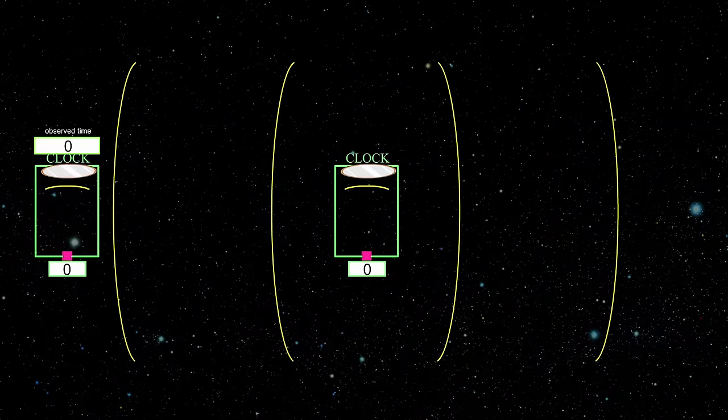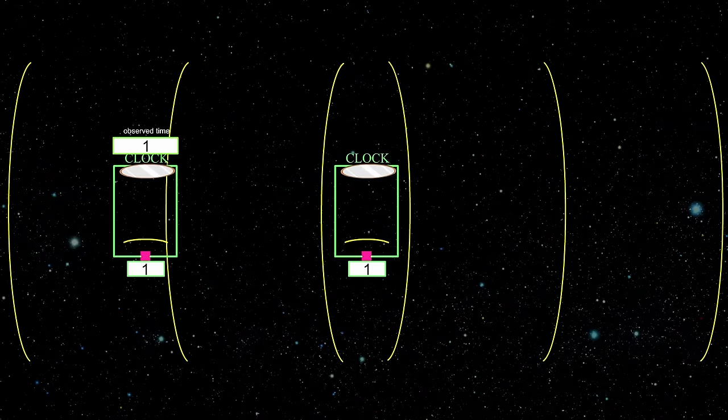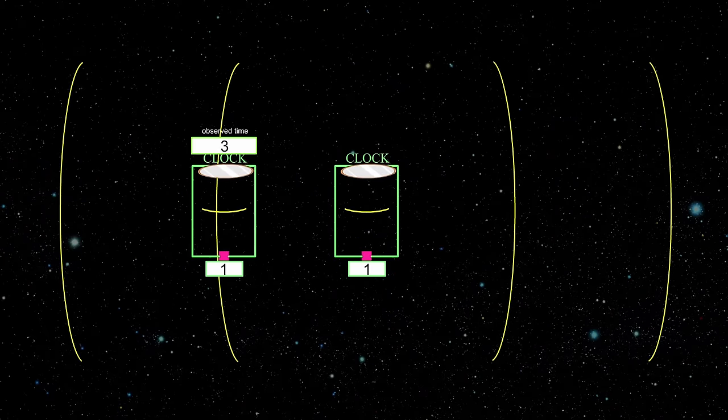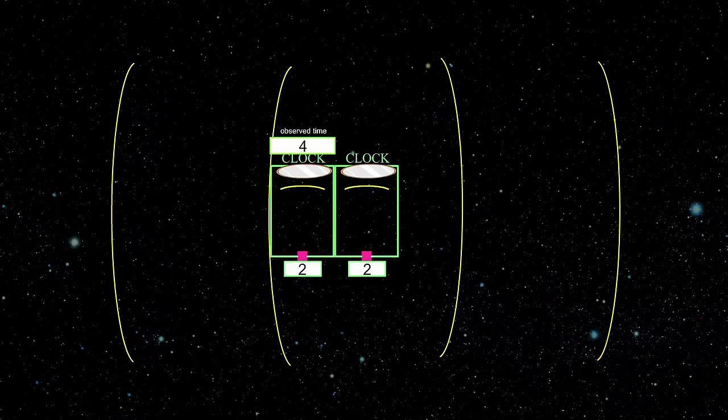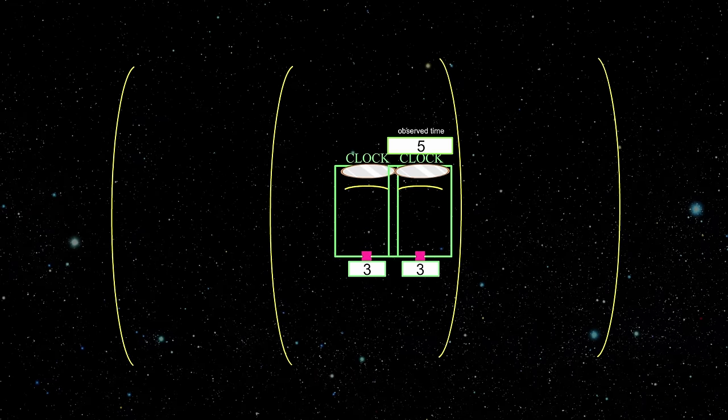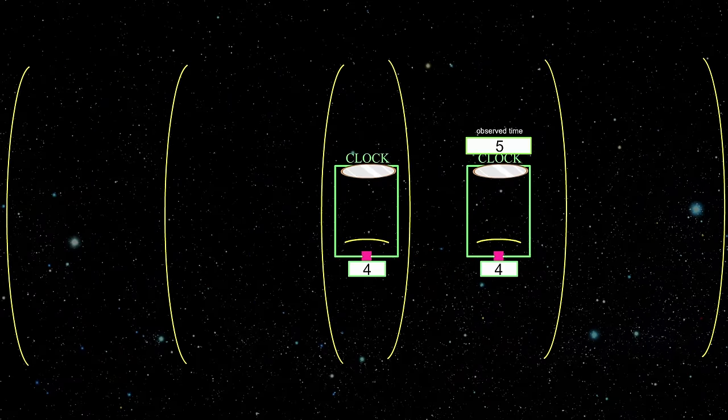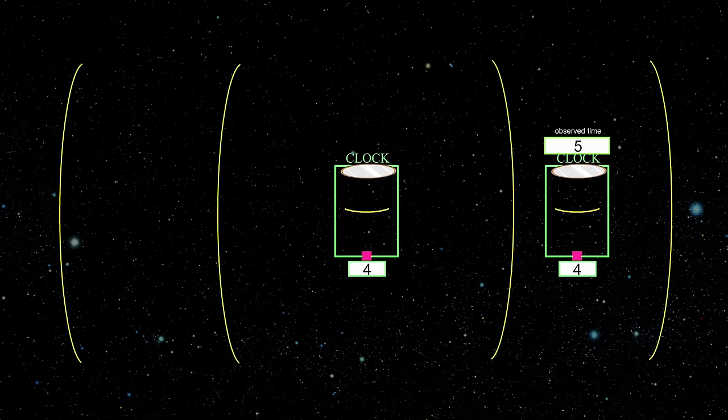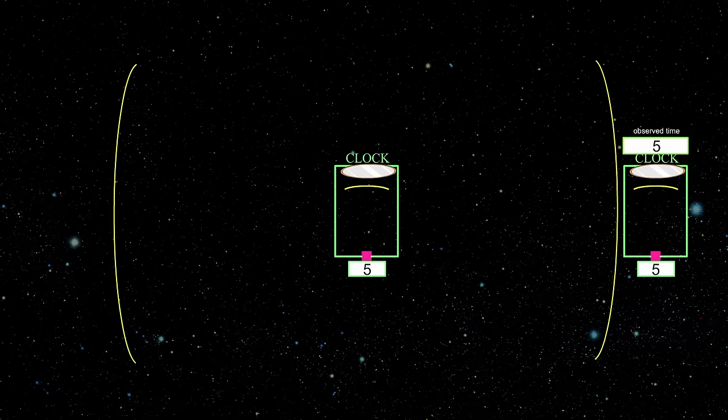This means that time between ticks of the clock you observe will be faster if you are moving towards it, and slower if you are moving away from it, due to the fact that the wave has to travel different distance to the observer after each tick.